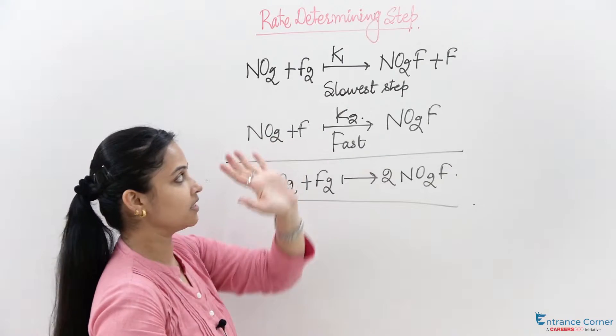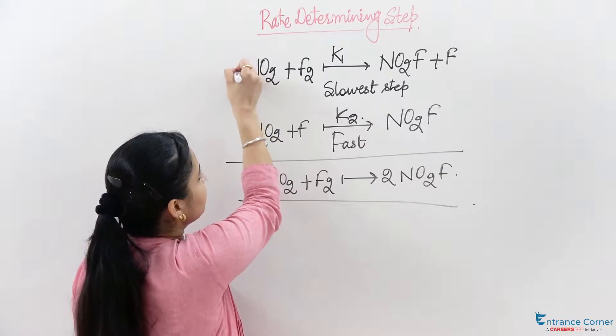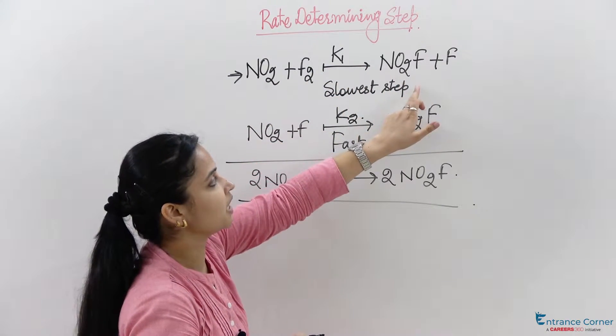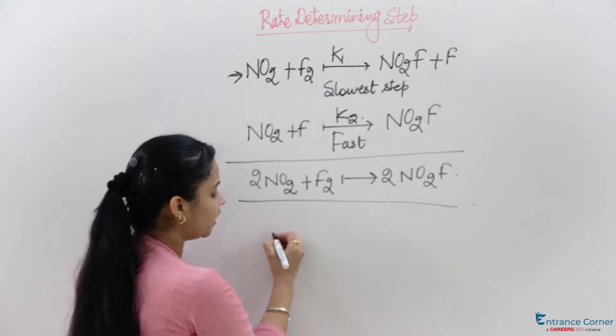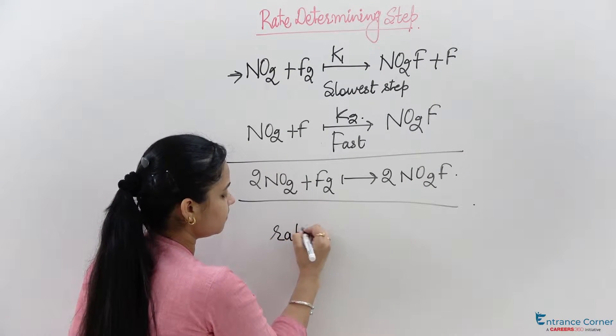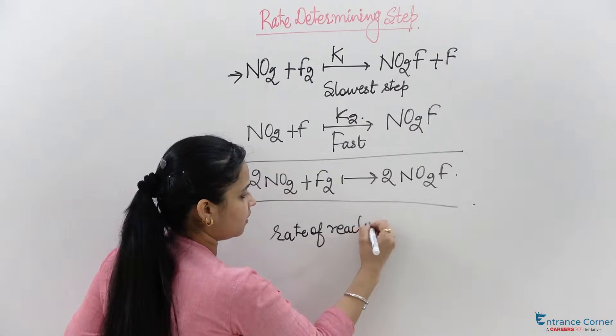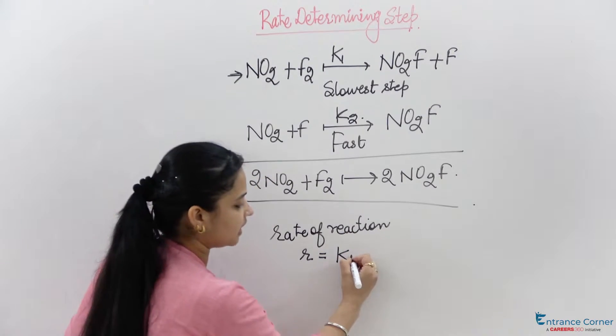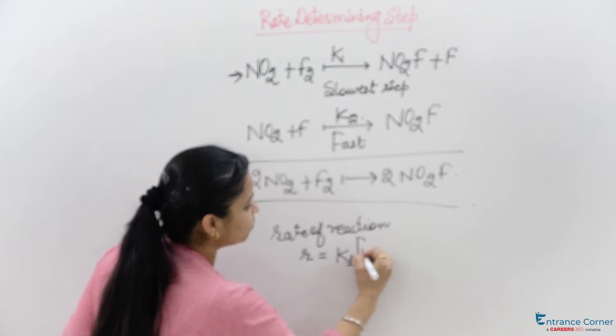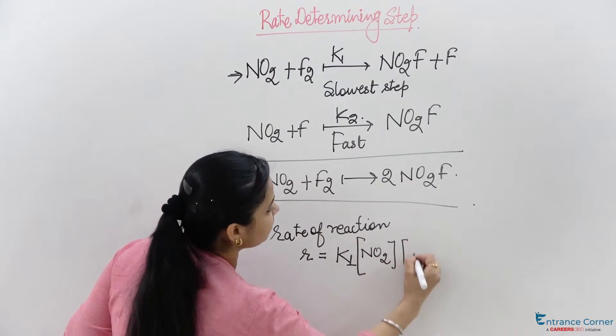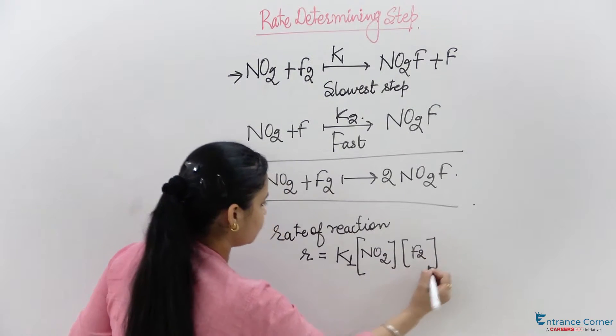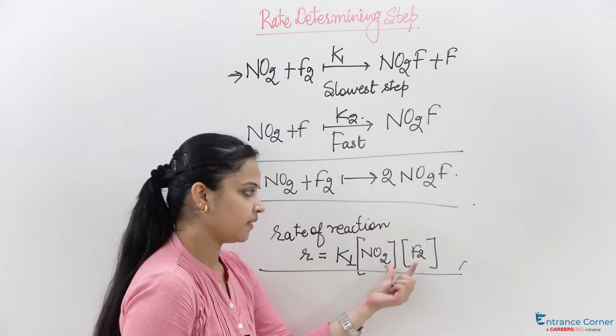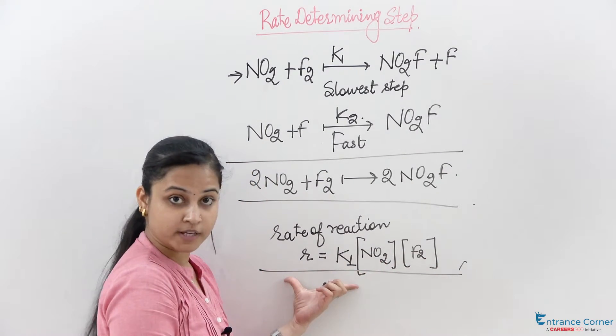The slowest step is NO2 plus F2 with rate constant K1 giving NO2F plus F. So the rate of reaction (represented as small r) equals rate constant K1 times the concentration of NO2 times the concentration of F2. This is the rate law expression.